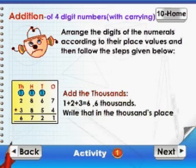Add the thousands. 1 plus 2 plus 3 is equal to 6. 6 thousands. Write that in the thousands place.